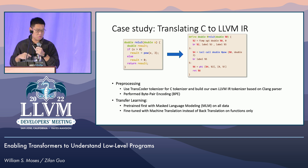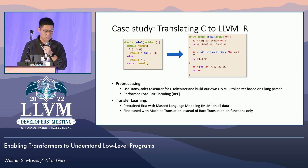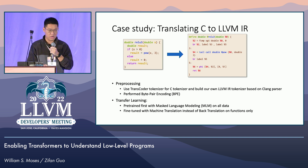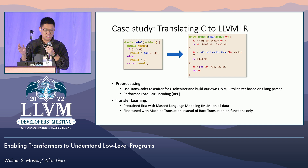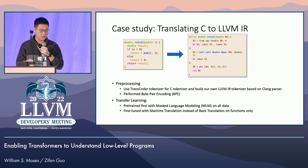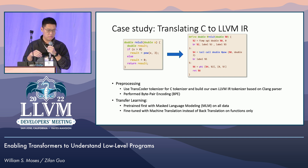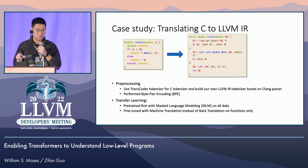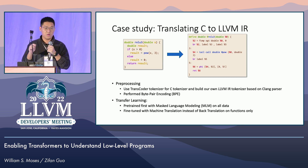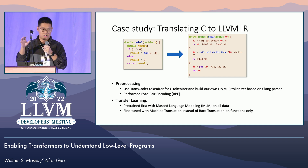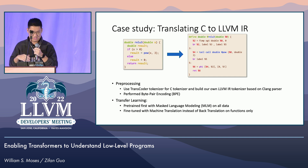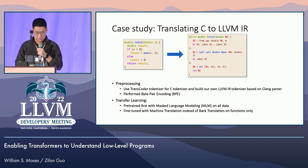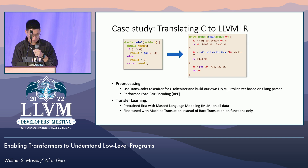We use the method of transfer learning: first pre-train on a lot of unlabeled data — all the C and LLVM datasets we can get our hands on — and then fine-tune it with a translation on functions only, because functions have some kind of one-to-one matches. There are a lot of things outside the functions that don't match between C and LLVM. That's how you pre-train and fine-tune the model.